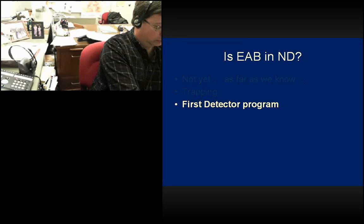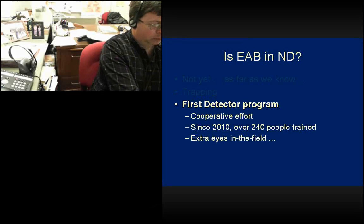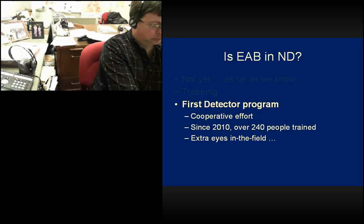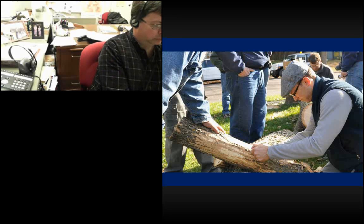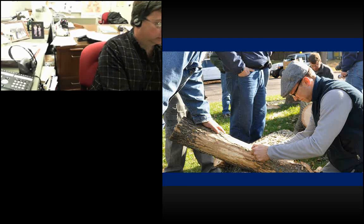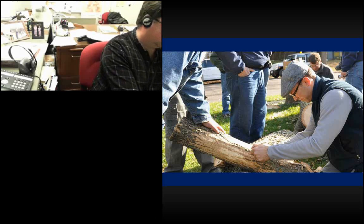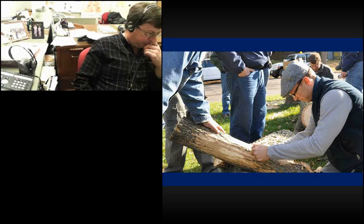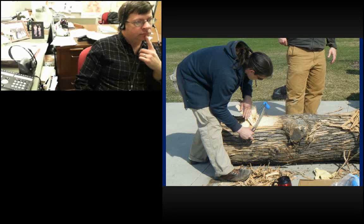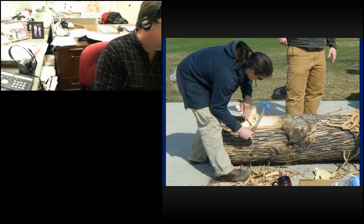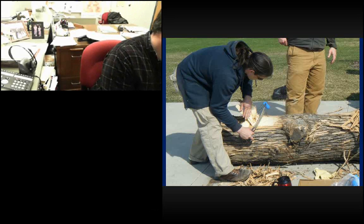Besides the trapping program, we've been running the First Detector program for the last four years — a cooperative effort among NDSU Extension, ND Forest Service, and ND Department of Agriculture. We've trained over 240 people since 2010. These are extra eyes in the field. Part of what we do is actually peel logs and look for EAB, showing people where and how to look. We've found some really neat insects under the bark, but we haven't actually found EAB — thank goodness. One of my fears is that we'll be doing a training session and that's where we actually find EAB.